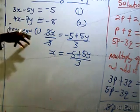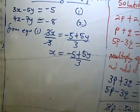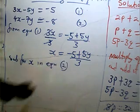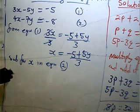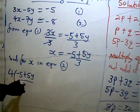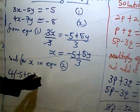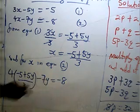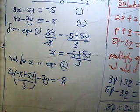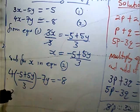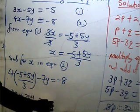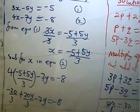Substitute x into equation 2 — because it was equation 1 that gave us the expression for x. Substituting: 4 times (minus 5 plus 5y) all over 3, minus 7y, equals minus 8. Opening the bracket: minus 20 over 3 plus 20y over 3 minus 7y equals minus 8. Collecting like terms: 20y over 3 minus 7y equals minus 8 plus 20 over 3.